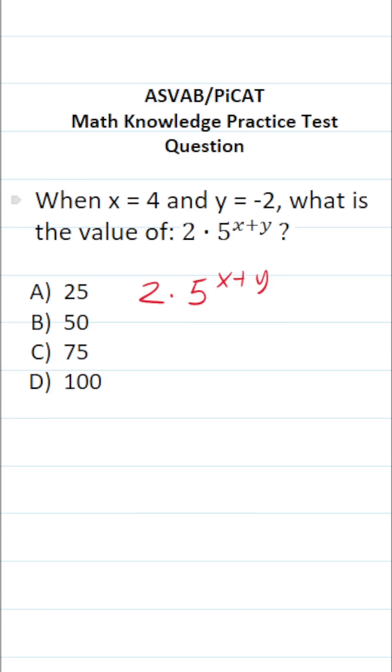In this case, we're being asked to evaluate this expression when x equals 4 and y equals negative 2, so what we're going to do is substitute 4 in for x and negative 2 for y and evaluate accordingly.